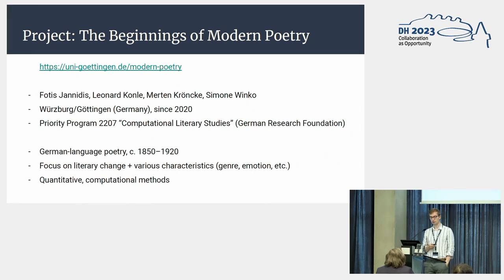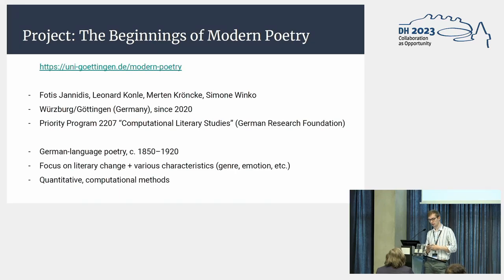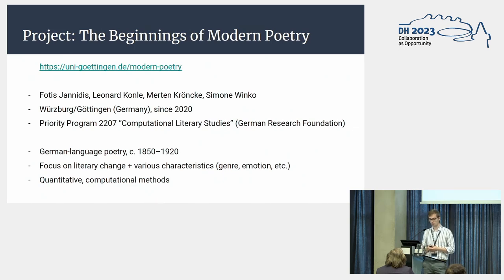Our project focuses on German language poetry from about 1850 to 1920. We analyze literary change and various characteristics of the poems — for example, genre, emotion, but also a lot more — and obviously we use quantitative computational methods.